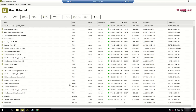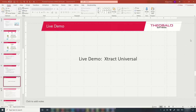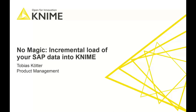That concludes the Theobel part. I'll now hand over to Tobias for the KNIME demo. So far you've seen the Theobel-related part with Extract Universal Server, which KNIME uses to get data out of your different SAP systems. Before the demo, Tobias gives a quick introduction to KNIME for those who haven't heard about it.